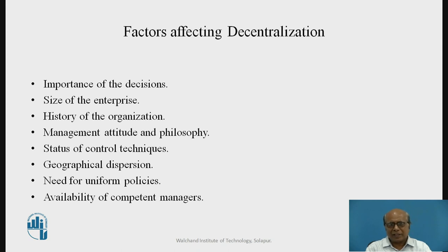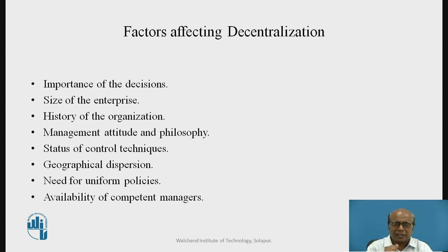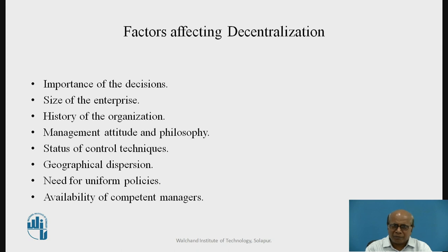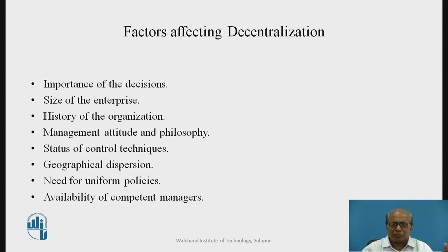The second factor is size of the enterprise. Normally, as the size grows, there is a tendency towards decentralization, because it becomes difficult to concentrate all authority at the top as the size gets bigger. Third is history of organization. When the organization grows from within through expansion, there is tendency towards centralization. While if the organization grows through mergers and amalgamations of two different units, acquisition of new businesses, there are tendencies towards decentralization.